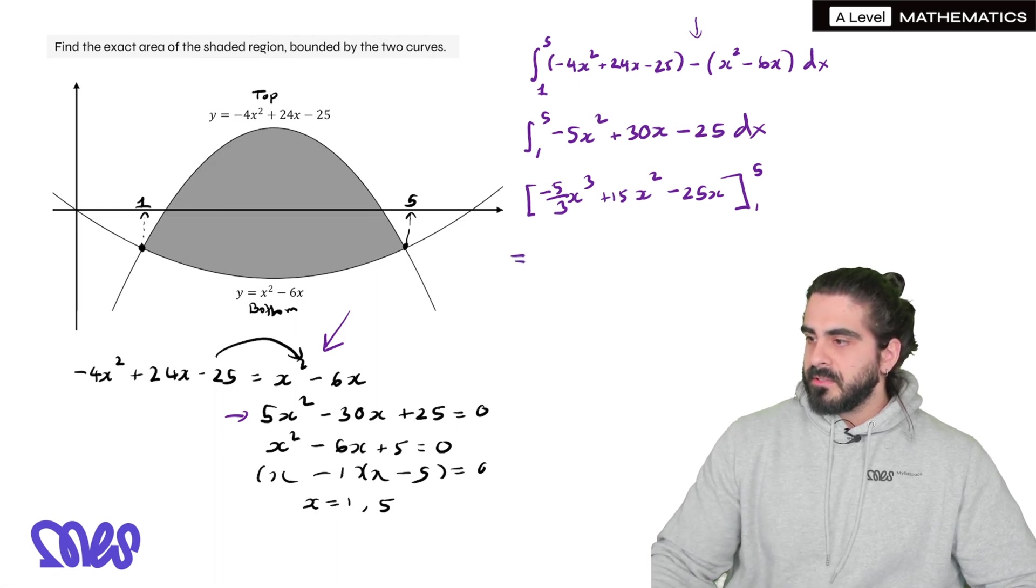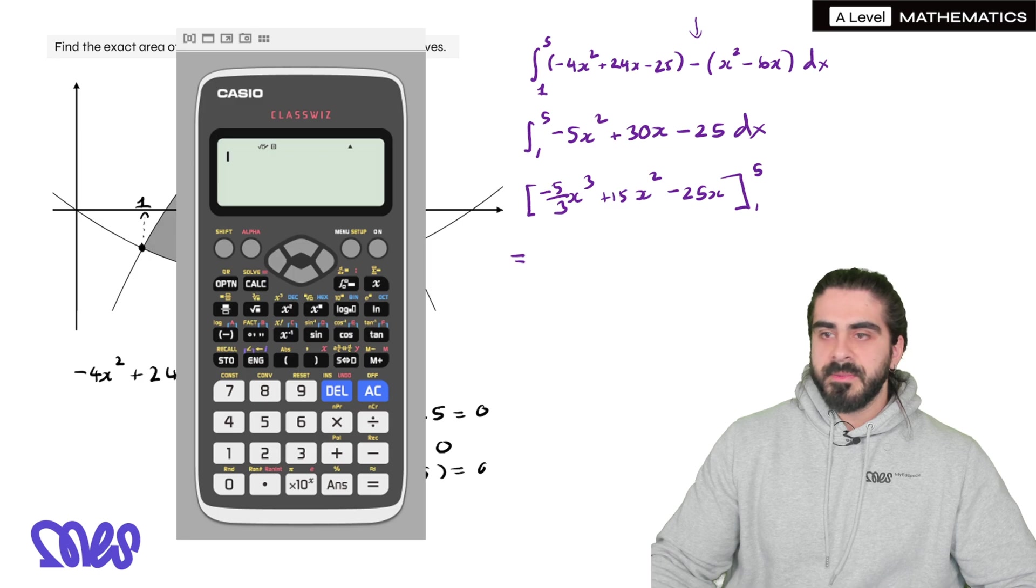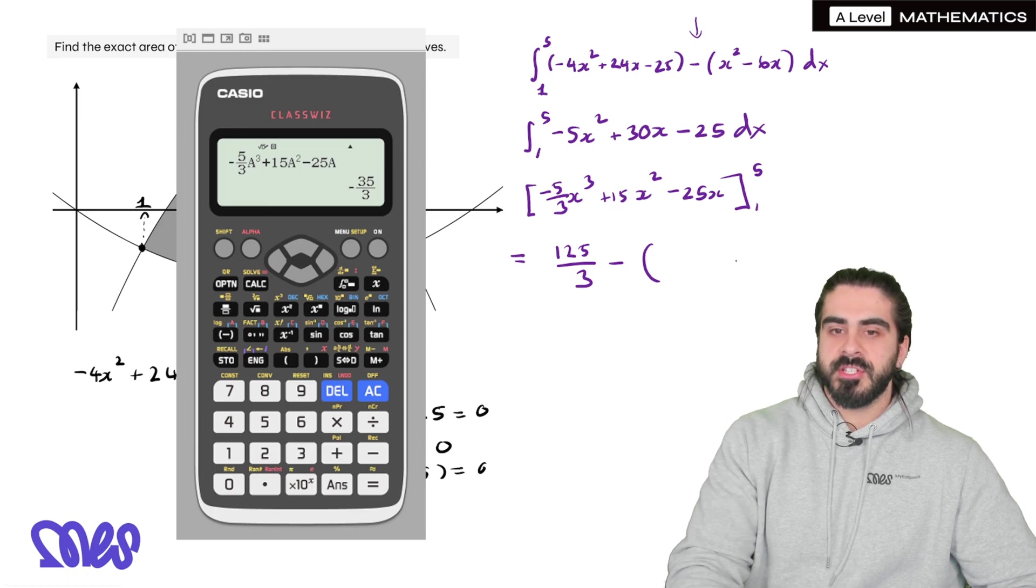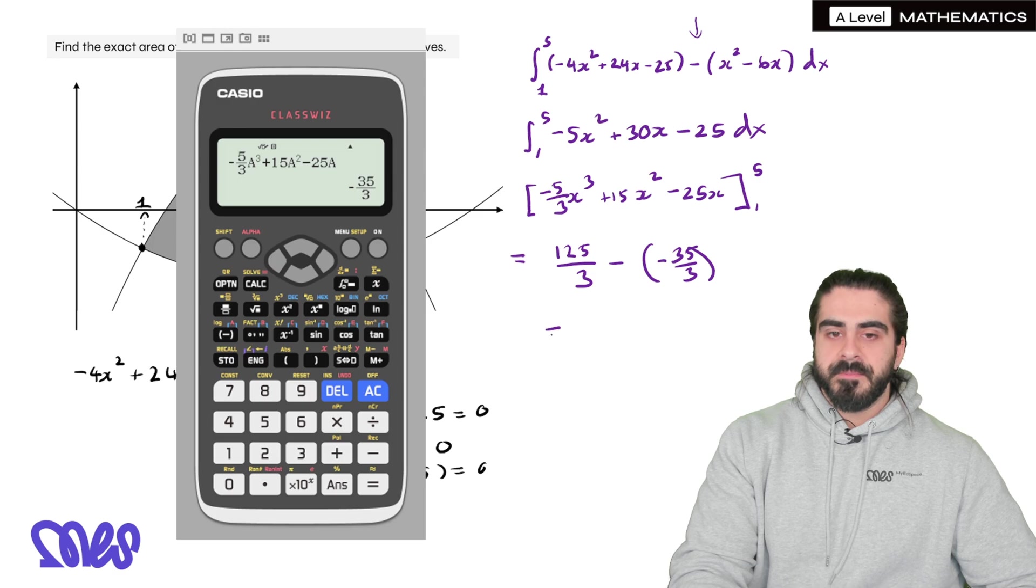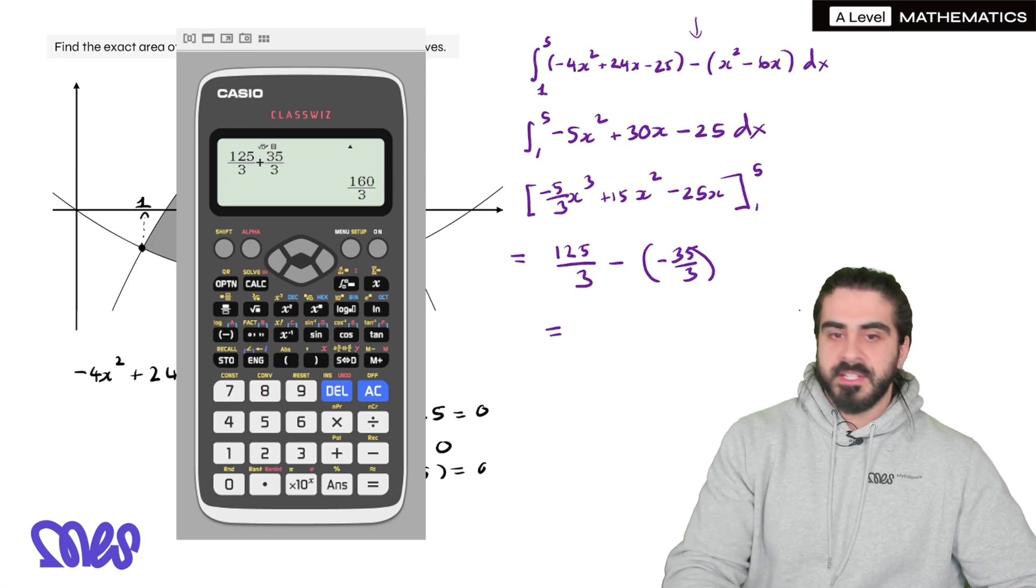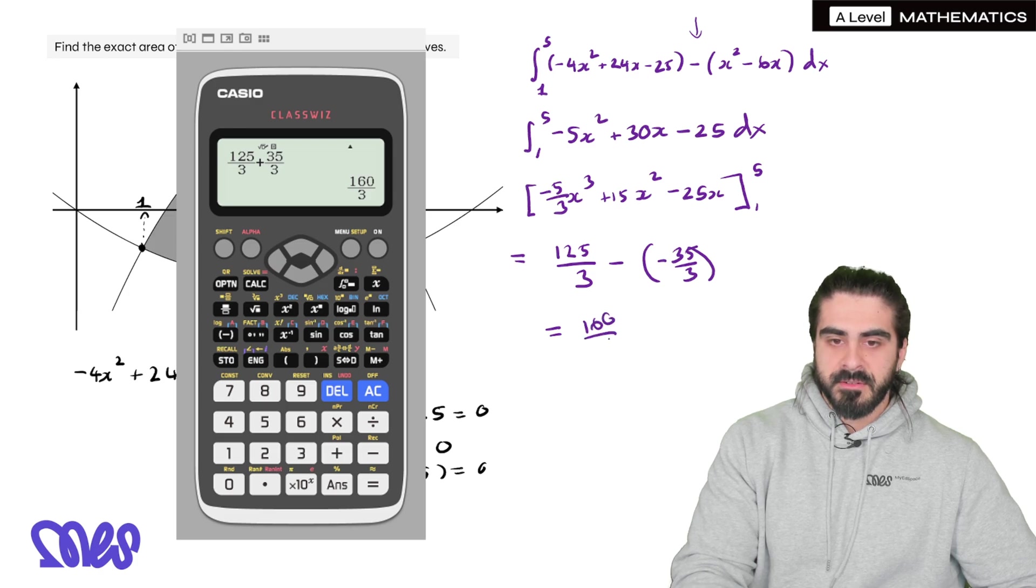Now with the calculator, let's input this nice and quick. Okay, so we get 125 over 3. And all we've done is changed our substitution to minus 35 over 3. So our final answer is 160 over 3 units squared.